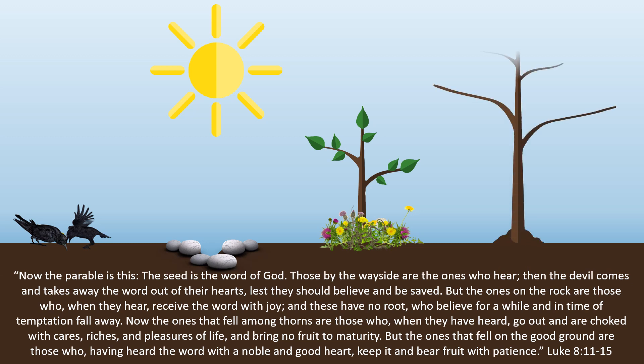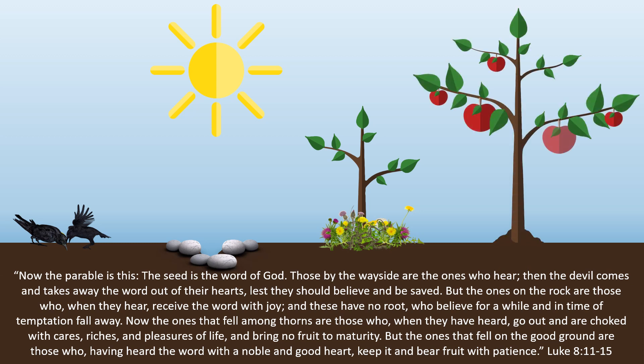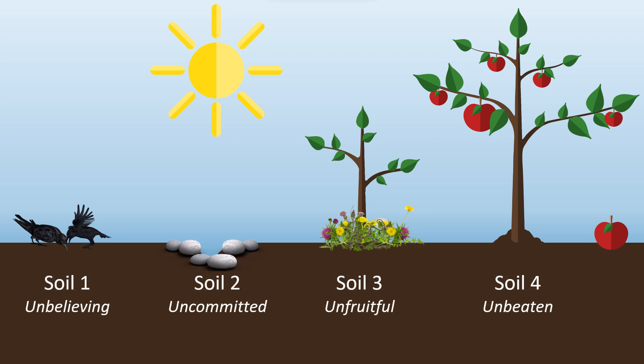But the ones that fell on the good ground are those who, having heard the word with a noble and good heart, keep the word and bear fruit with patience. Every descendant of Adam and Eve eventually falls into one of these four categories depending on how they respond to the seed which is the word of God. But only the fourth soil is unbeaten by the schemes of the devil.